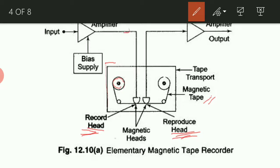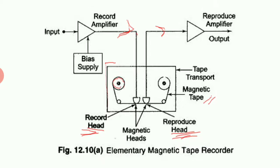We have a channel for giving an input signal, which is fed into the recording head, and a channel to take the output signal along with an amplifier — the output signal is taken from the reproducing head. While recording, the magnetic tape moves in one direction and the signal is encoded onto it as magnetic data. While receiving data, the tape moves in the opposite direction and the reproducing head reads the data, giving us back the output signal.